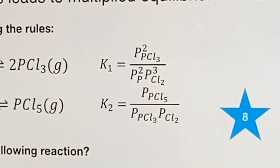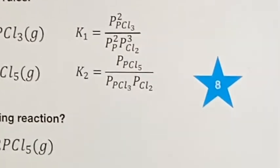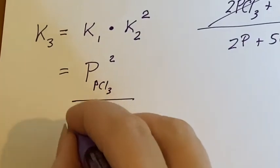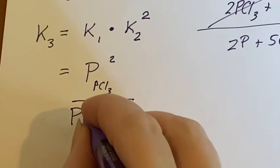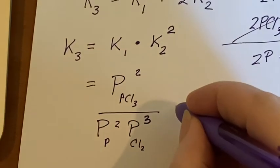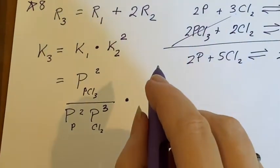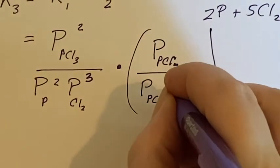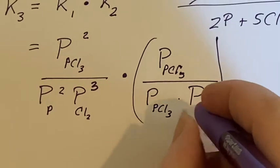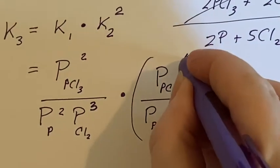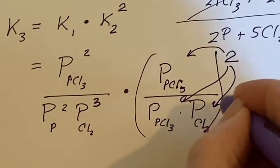So we'll write down what K1 is in terms of this: pressure of the trichloride squared over pressure of the phosphorus squared and pressure of the chlorine gas cubed. That's the first one. Multiplying it by the second one which needs to be squared: pressure of pentachloride over pressure of the trichloride and pressure of the chlorine gas. But that whole thing needed to be squared. That means it has to appear here and it has to appear there and it has to appear there.